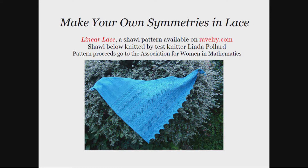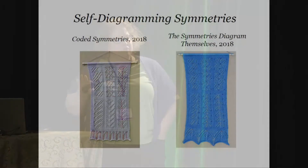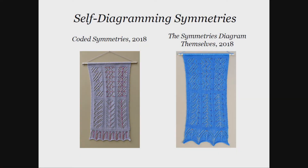I'd done a couple of other lace symmetry pieces and thought I'd worked through that, but I had this great idea just in January — so it's only been a few months — that I could actually use beads to label the symmetries in the artwork themselves. These are a couple of pieces of artwork I made. The beads are a bit small in projection, but the symmetries are color-coded. The blue one is over on the table, so I invite you to see that in person.